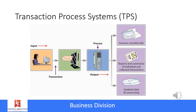A transaction is any business event that generates data that needs to be stored in a database. This might include a product being manufactured, a student enrolling in a class, a service sold, a person hired, a payroll check generated, an order for inventory placed, and many other day-to-day activities that any business or organization will have. A transaction processing system collects, stores, monitors, and processes data from all the organization's basic business transactions.